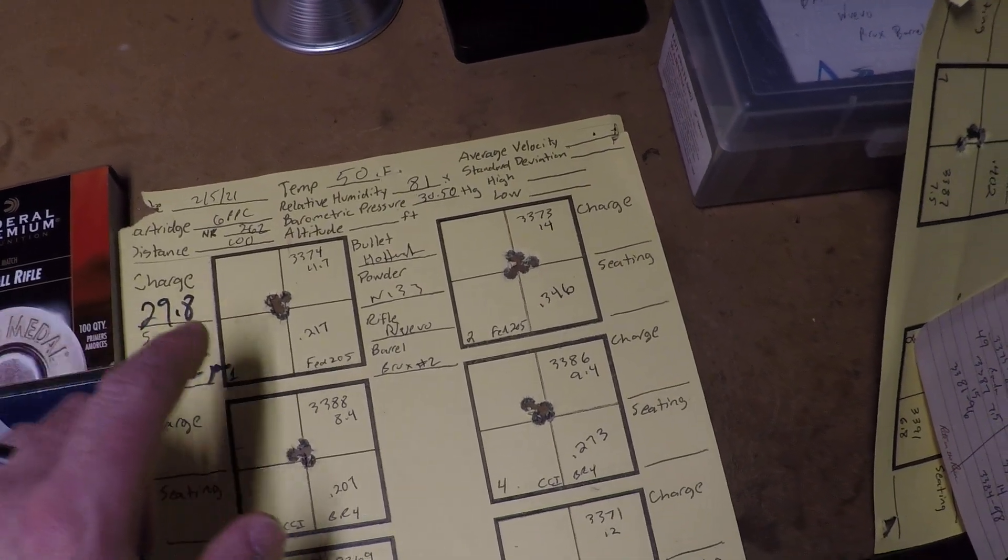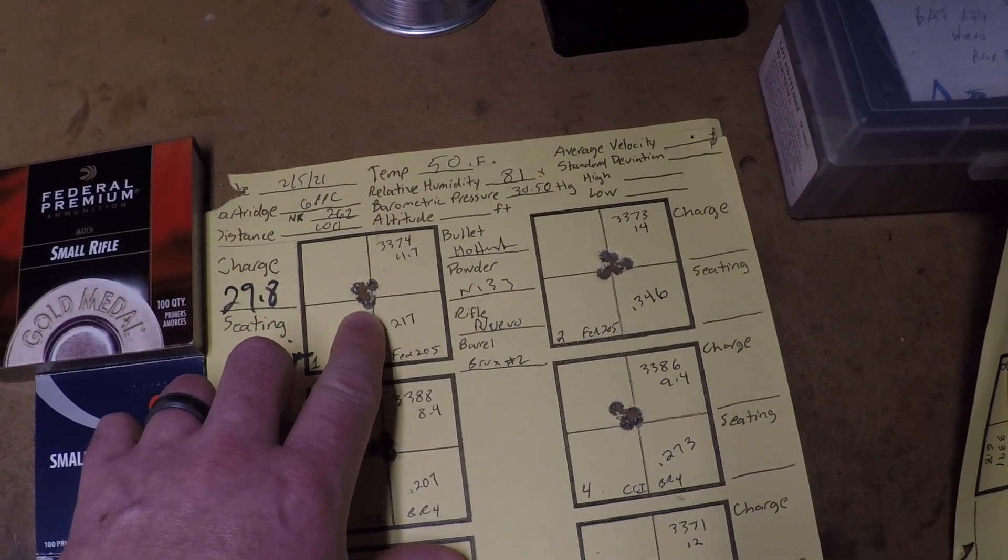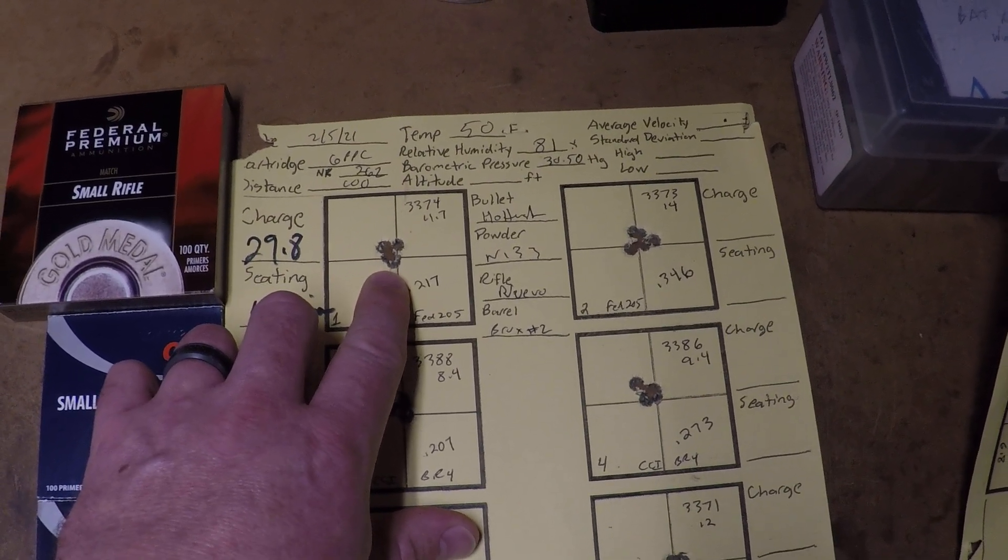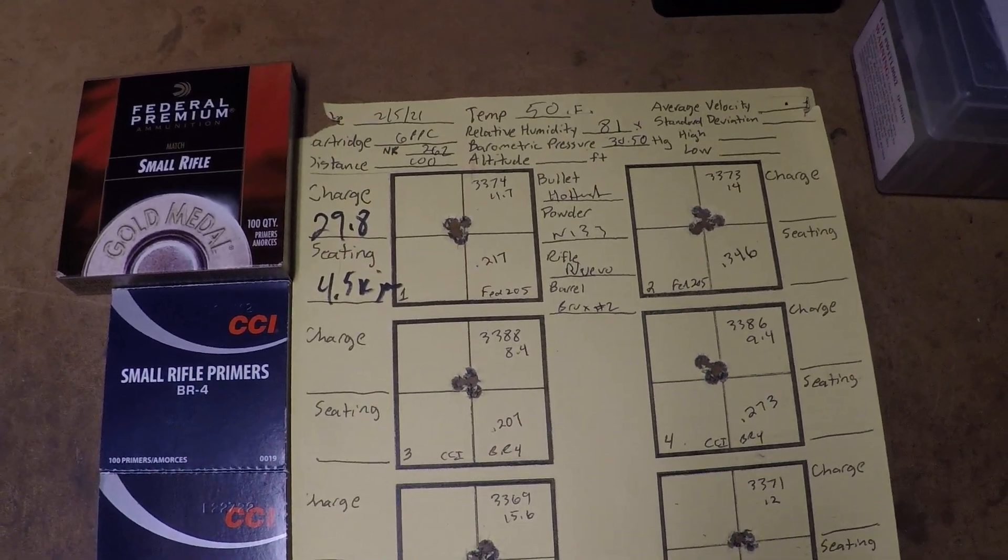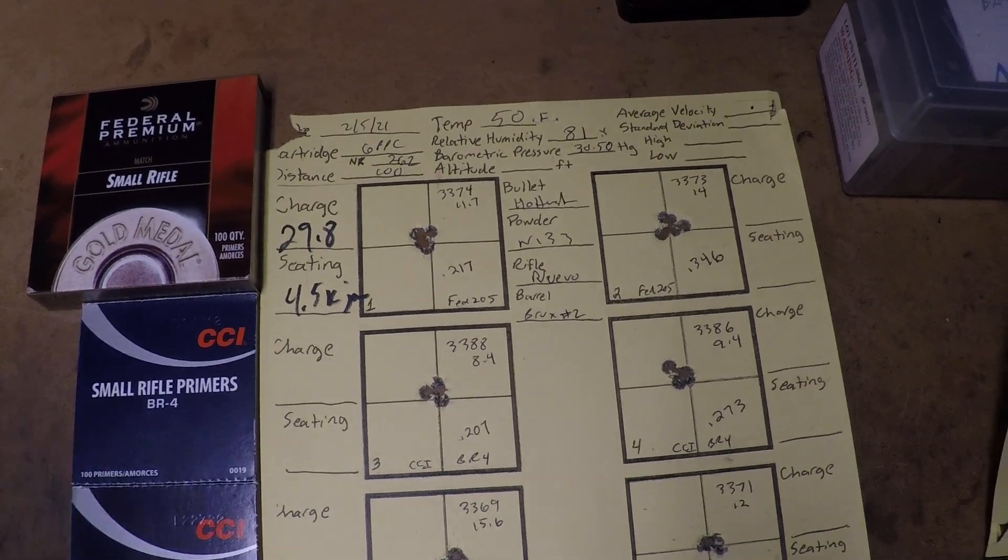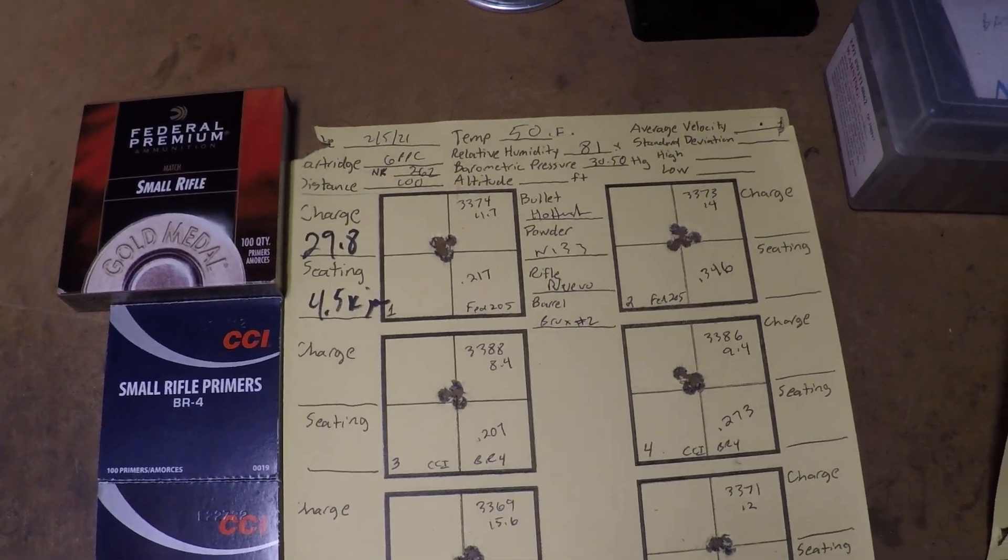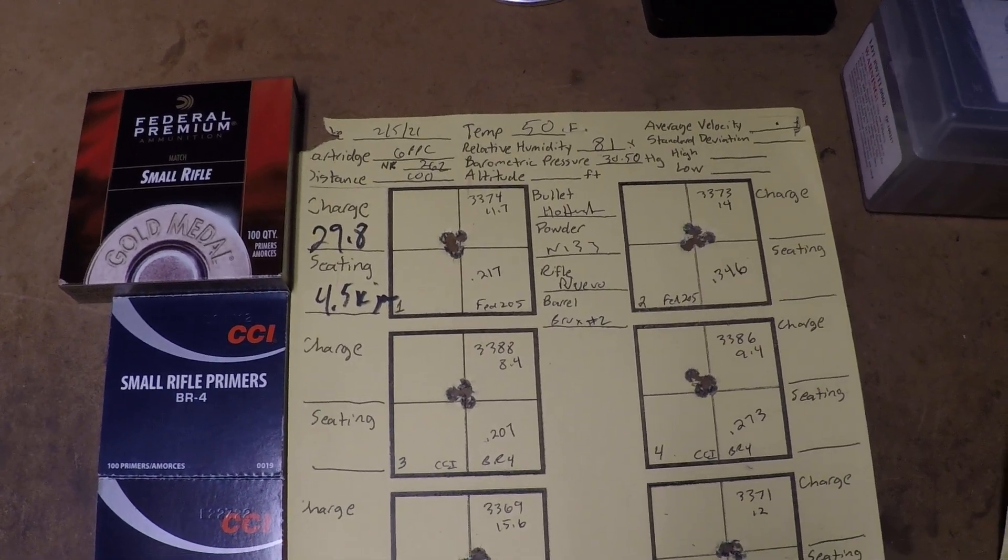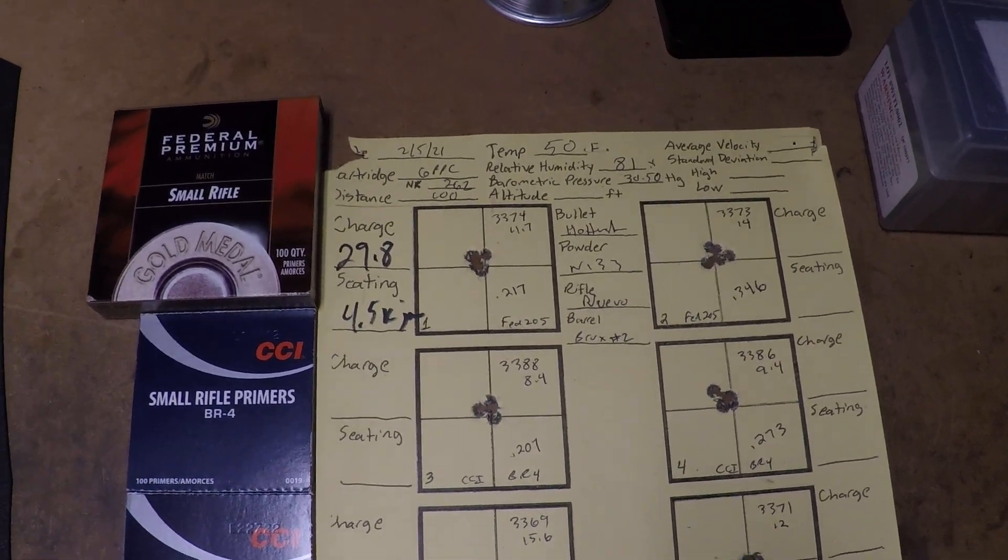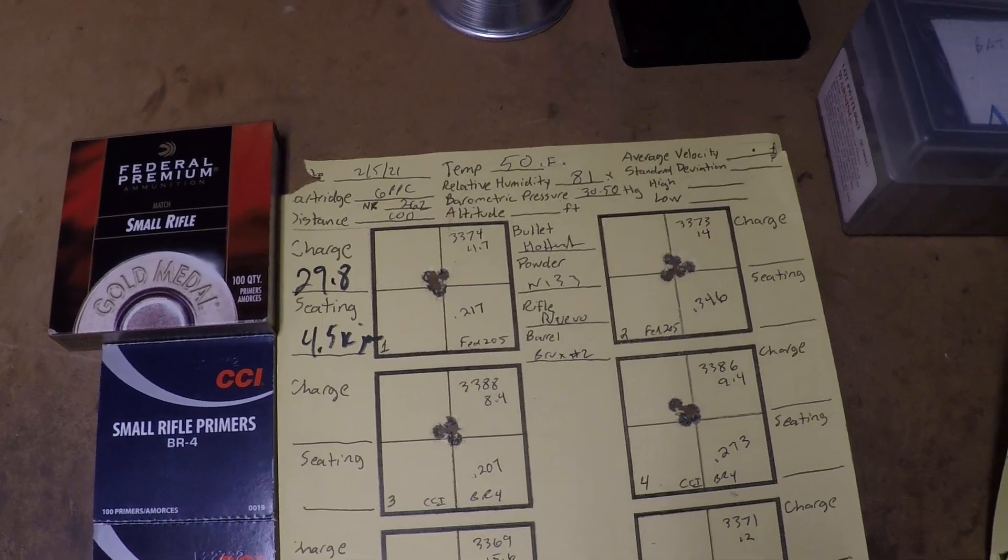So, with the Federal, the group did open up a little bit compared to a 29.9, but I wanted to use a little bit of a lighter charge, just as a precaution. I know there's some ideas out there about if you change the primer type, then it'll increase velocity, it'll burn differently. Be careful.